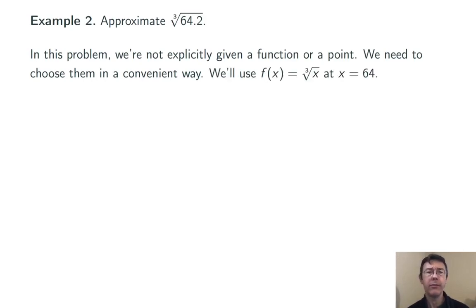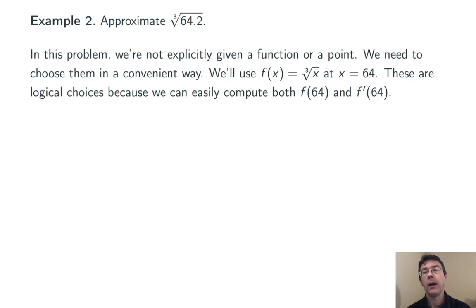We're going to use f of x as the cube root of x, and we're going to linearize at x equals 64. Why? Because we can relatively easily compute f of 64. The cube root of 64 is just 4. And the derivative of the cube root of x will be fairly easy to compute. And in particular, it'll be easy to compute at 64.